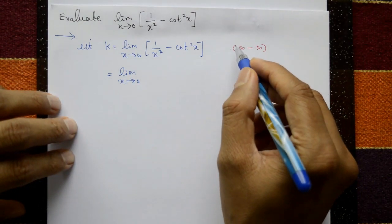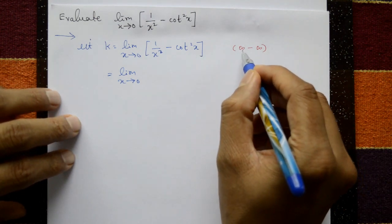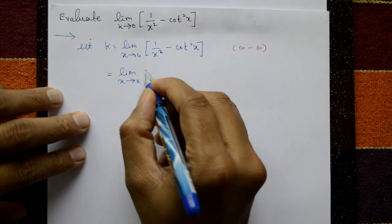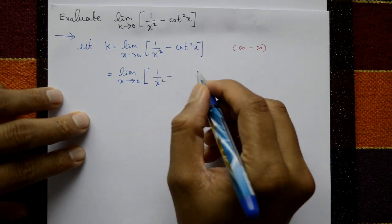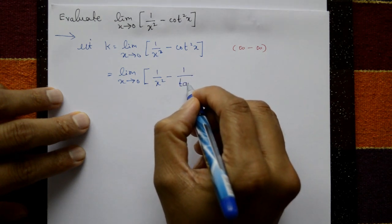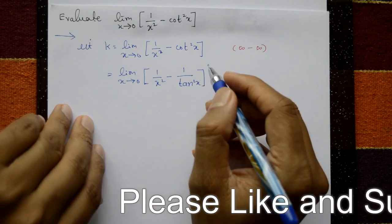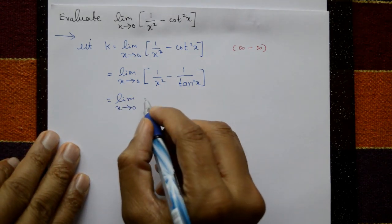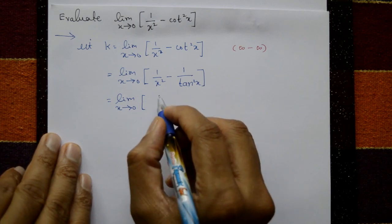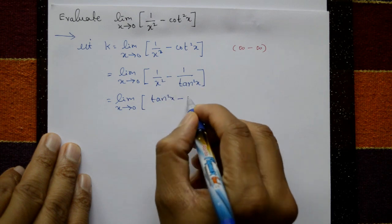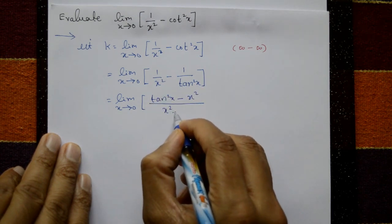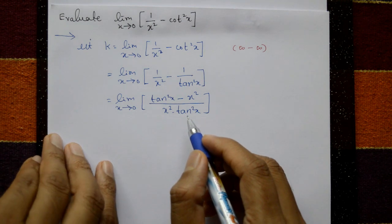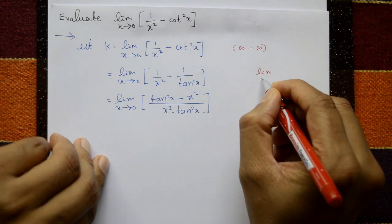To apply L'Hôpital's rule we require 0/0 or infinity/infinity form, but this is infinity minus infinity. To convert to standard form, take LCM: limit x tends to 0 of (tan²x minus x²) divided by (x² times tan²x).